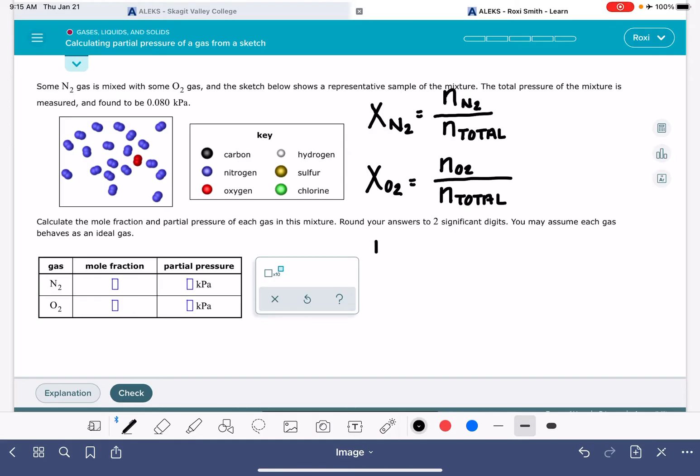The partial pressure is given this symbol where we use capital P for pressure, and in subscript we write the formula of the gas. The partial pressure of N2 is calculated by taking the mole fraction of N2 and multiplying by the total pressure of all gases in the mixture. Similarly, the partial pressure of O2 is the mole fraction of O2 times the total pressure of all gases in the mixture.